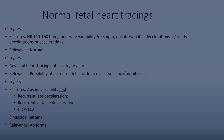Now let's talk about fetal heart tracing categories — one, two, and three. Category two is anything not in category one or three, and one and three are the important ones to focus on. Category one has all of these features simultaneously: heart rate of 110 to 160, which is normal fetal heart rate; moderate variability, meaning the heart rate varies between 6 to 25 beats per minute; no late or variable decelerations; and early decels or accelerations are both considered within normal limits.